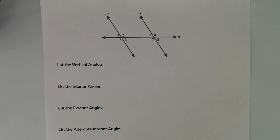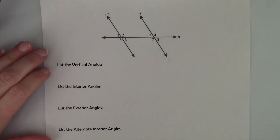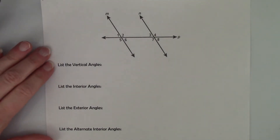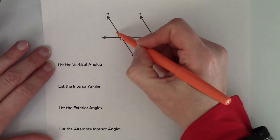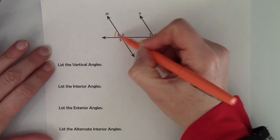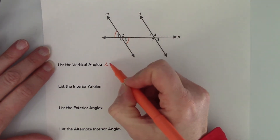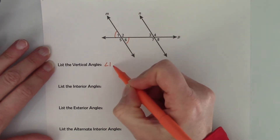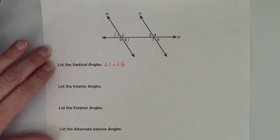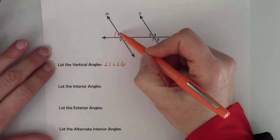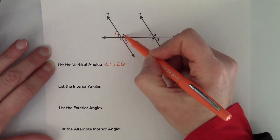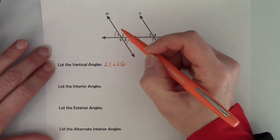So the first thing the sheet wants you to do — I want you to do — is to list the vertical angles. So on this side, angle 1 and angle 6 are vertical angles. And then also angle 2 and angle 5 are vertical angles.